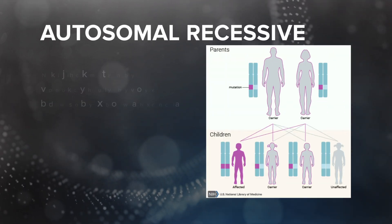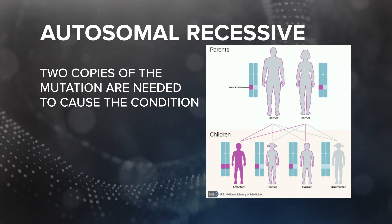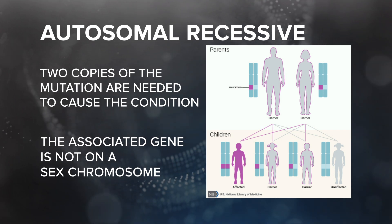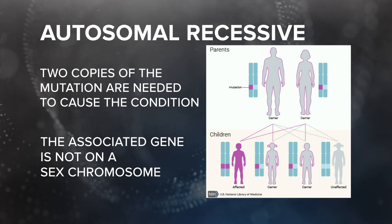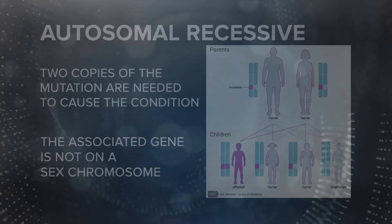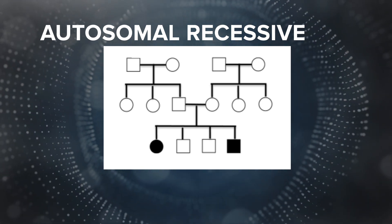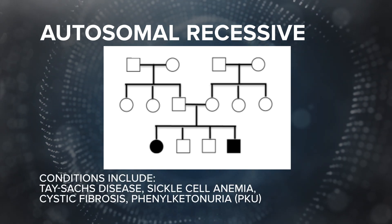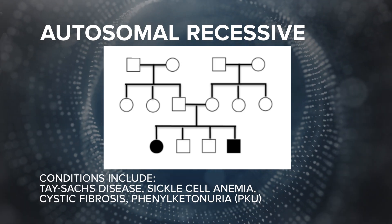If a person must inherit two copies of a particular variant of a gene in order for the associated condition to appear, the trait is said to be recessive. An autosomal recessive condition is a condition that follows a recessive pattern of inheritance and is associated with a gene on an autosome. Autosomal recessive conditions are usually not seen in every generation of a family history, as shown in the pedigree here. Conditions that follow an autosomal recessive pattern of inheritance include Tay-Sachs disease, sickle cell anemia, cystic fibrosis, and PKU.